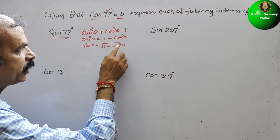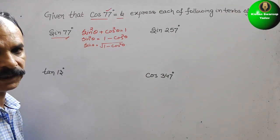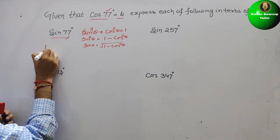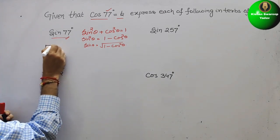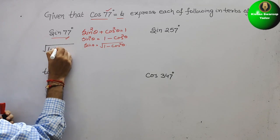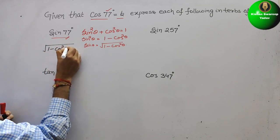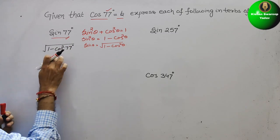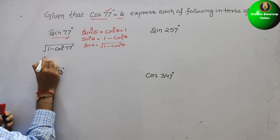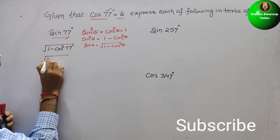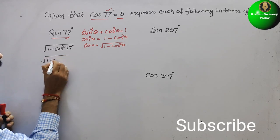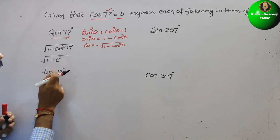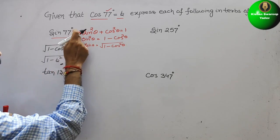Instead of θ we write 77°, so sin 77° = √(1 − cos² 77°). Now substituting the value, cos 77° = B, we get sin 77° = √(1 − B²). So this is the answer for sin 77°.